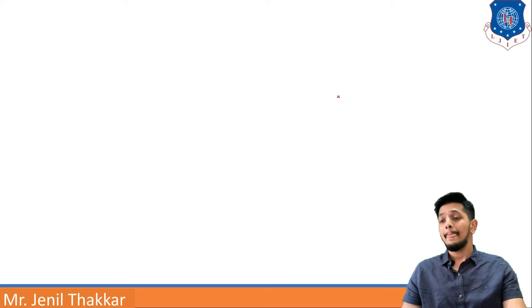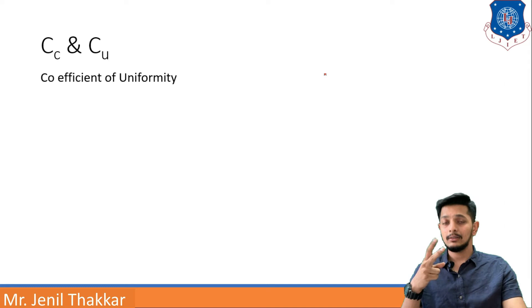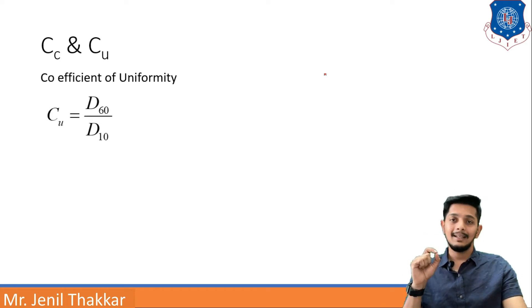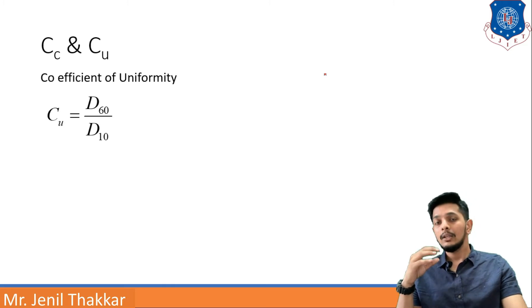Moving forward into CC and CU. Two basic main things from particle size distribution curve. First is coefficient of uniformity CU. Let us discuss CU. CU is defined as ratio of D60 to D10.